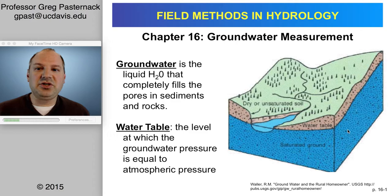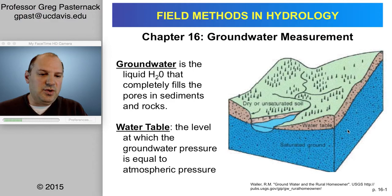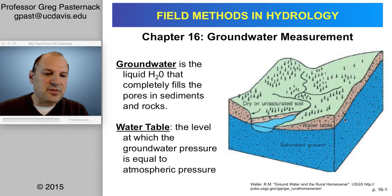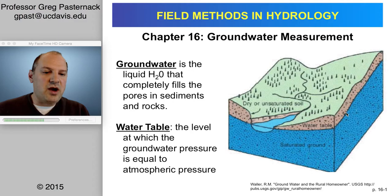Some basic definitions: groundwater is the liquid water that completely fills pores in sediments and rocks. In this illustration, the blue is illustrating groundwater — the saturated subsurface. We can define the water table conceptually as where that water transitions, but it's not a fine line. Instead we define it on a pressure basis as where the water pressure is equal to atmospheric pressure.